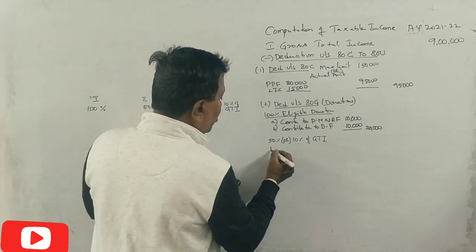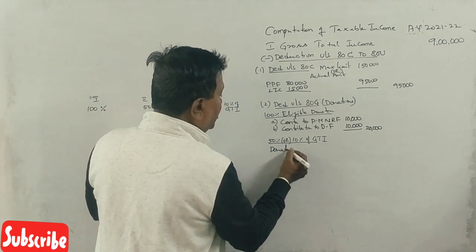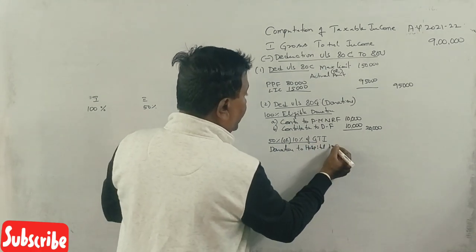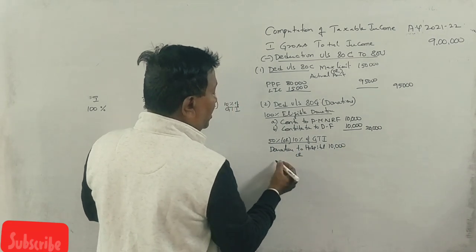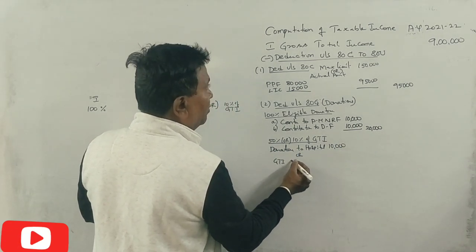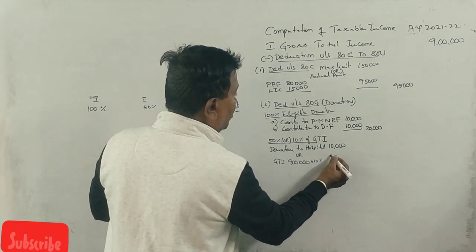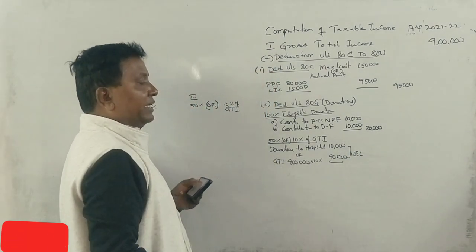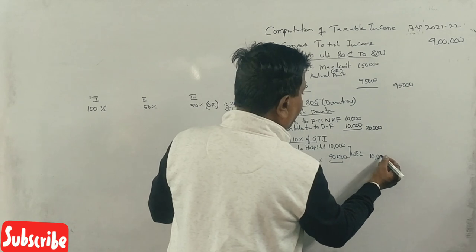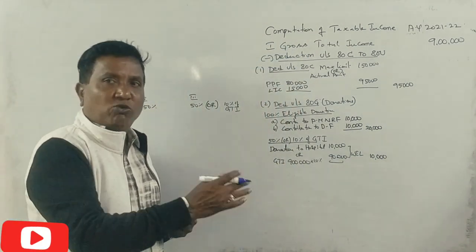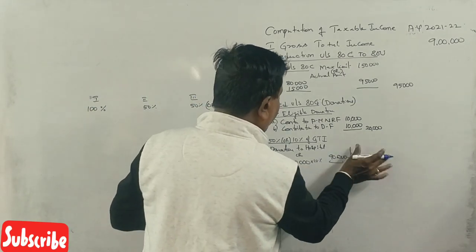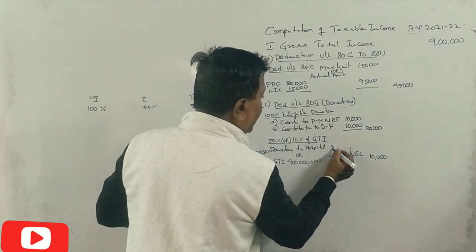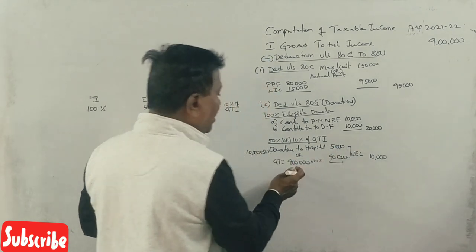The second category covers donations to charitable hospitals. Donation to hospital is 10,000 rupees. However, this is subject to 50% deduction, and also limited to 10% of gross total income. So 50% of 10,000 is 5,000, but we also check 10% of gross total income of 9 lakhs, which is 90,000. So the qualifying amount here is 5,000.